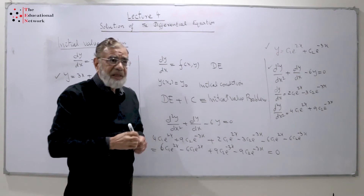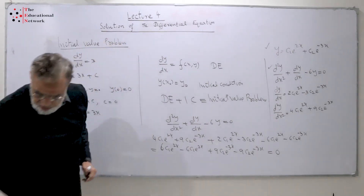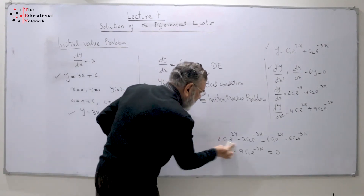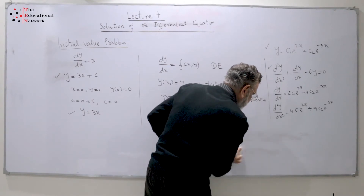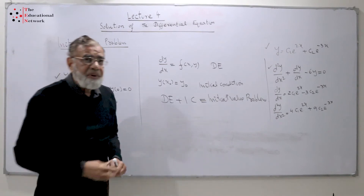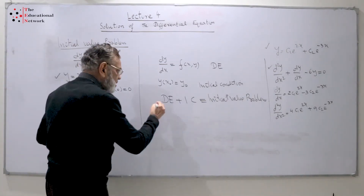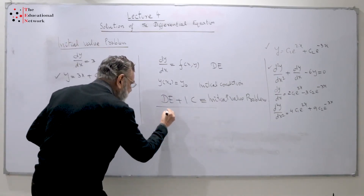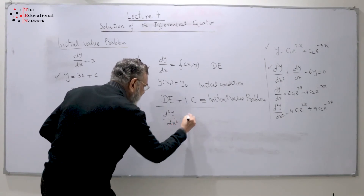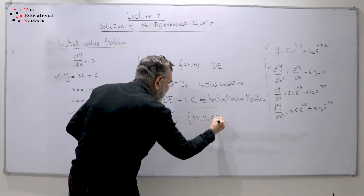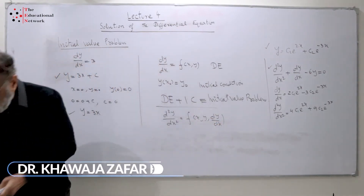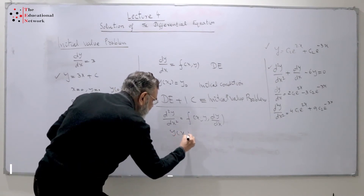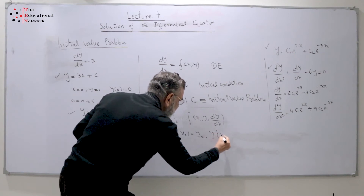So when there is a second order differential equation, we have two arbitrary constants. For a first order differential equation, we find one constant defined at one point. For a second order differential equation, d²y/dx² = f(x, y), we need two conditions: y at x = 0 equals y₀, and y' at x = 0 equals y₁. These two conditions are defined at the same point.